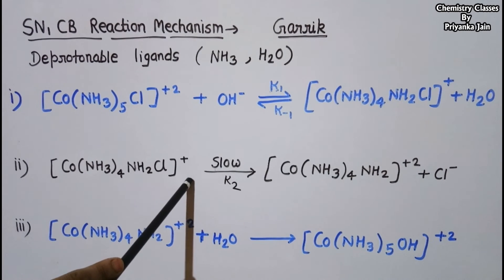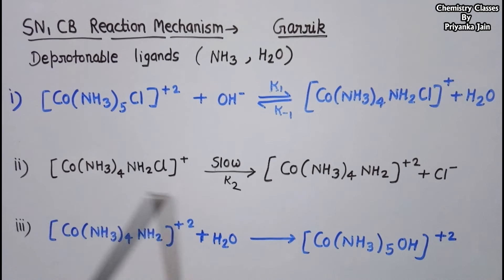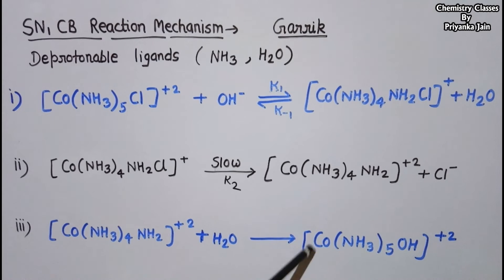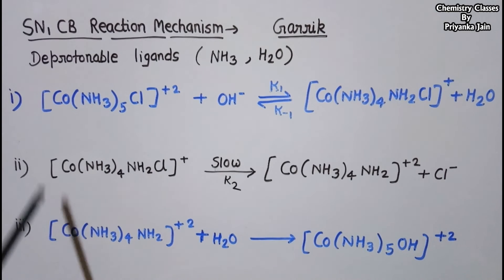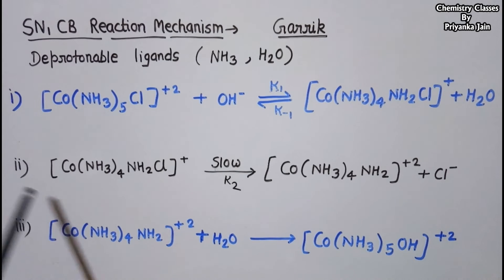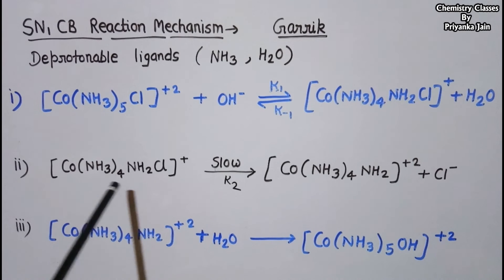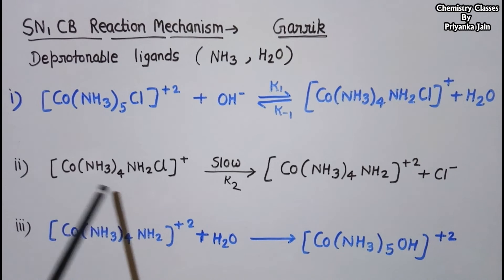In the third step, the complex abstracts a proton from a water molecule to form the product [Co(NH₃)₅OH]²⁺. From these three steps, we can see that the second step is the rate-determining step because it is the slowest step.